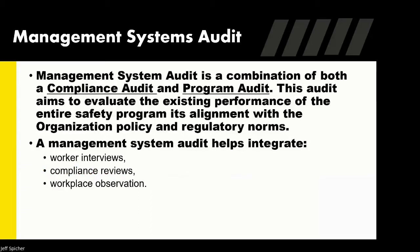The next type of audit is a management system audit. These are more comprehensive and are for more mature health and safety systems. They take an approach to look at both compliance and written programs, and are basically a performance audit. These audits are more extensive — they get into worker interviews, compliance reviews, and workplace observation, as well as document review. A lot of management systems are designed by corporations for internal auditing, and they look at many different elements from a performance standpoint.